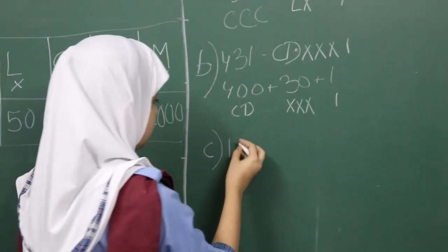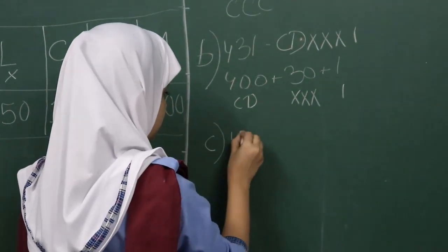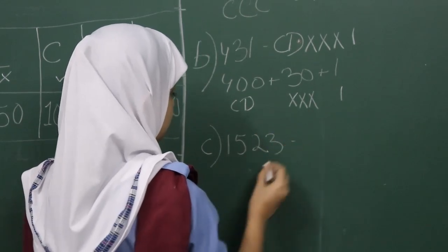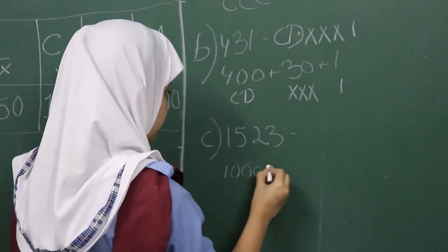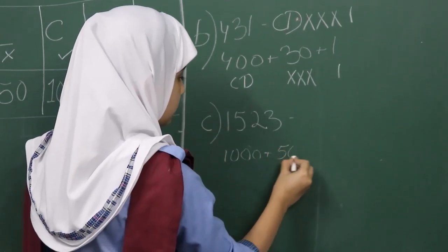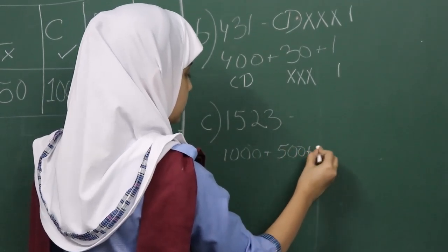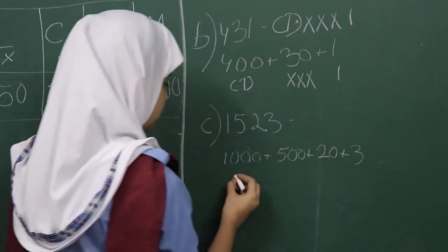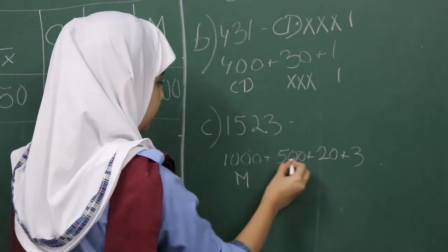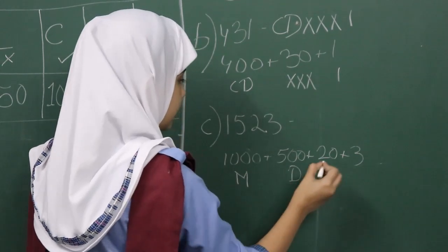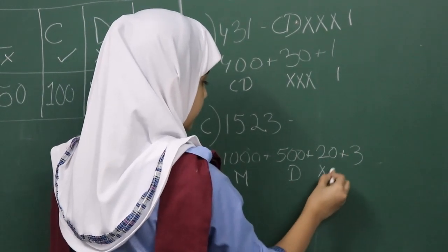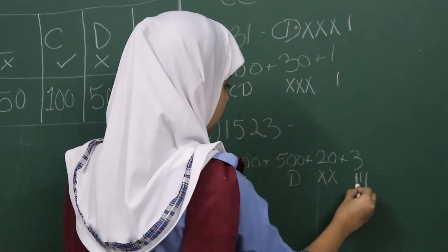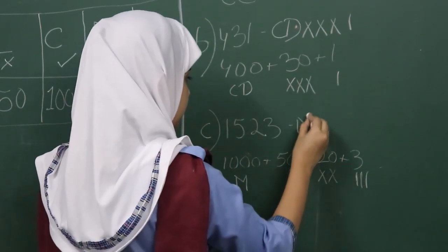Let's take one more example: 1523. That is one thousand plus five hundred plus twenty plus three. One thousand is M. Five hundred is D. Twenty is XX. And three is III. So we write MDXXIII.